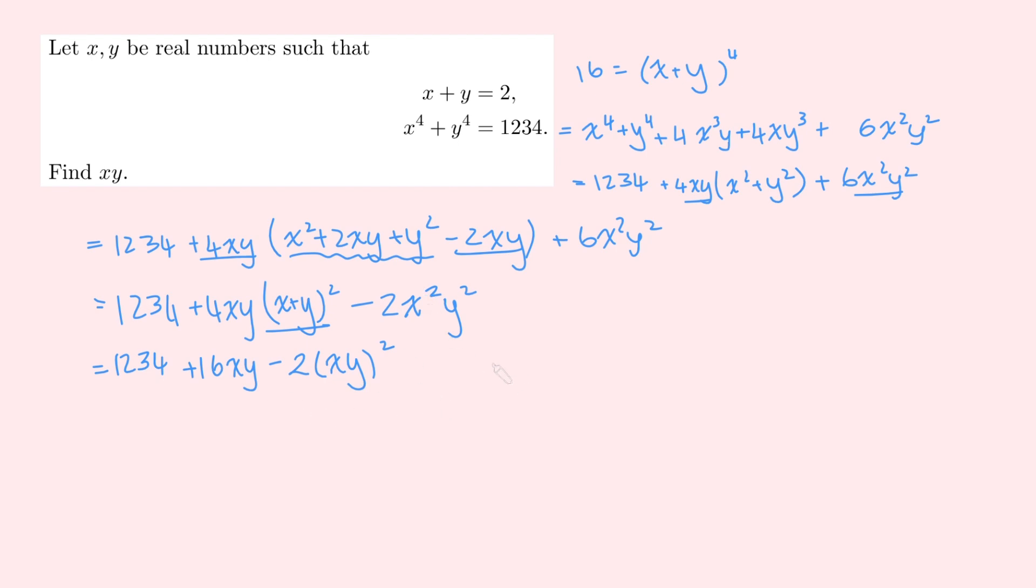Now, for the purpose of simplification, let me just call this v or something. So let v equal xy. And so therefore, this thing here gives me 16 is 1234 plus 16v minus 2v squared. And here we just have a quadratic.